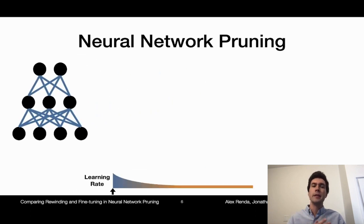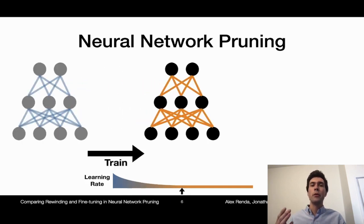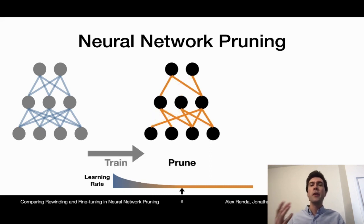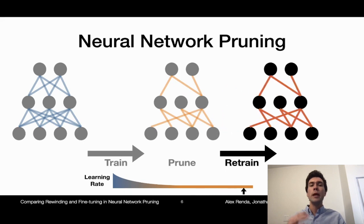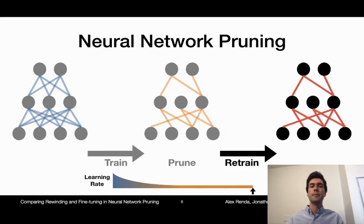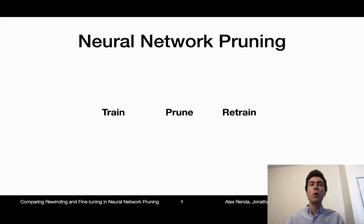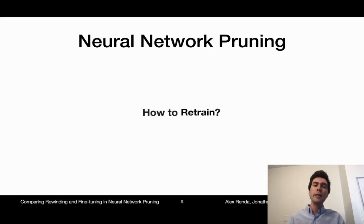So to recover accuracy, the standard approach is to retrain the network. The typical pruning process looks like this: first, you train the network using some given learning rate schedule, then you prune the network with some pruning heuristic, and then you retrain the unpruned weights of the neural network. This retraining process is typically called fine-tuning in the literature. The core components in the pruning framework are training, pruning, and retraining. In this paper, we evaluate different retraining techniques.